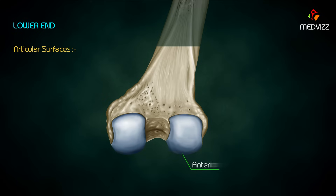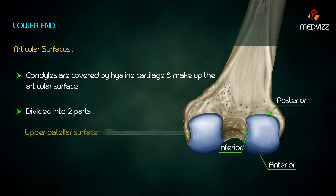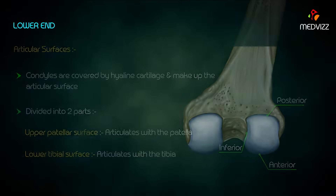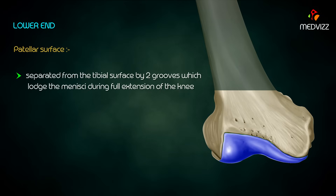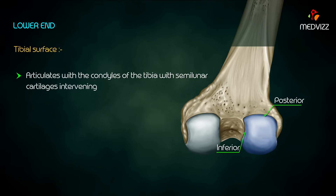The anterior, inferior, and posterior surfaces of the condyles are covered by hyaline cartilage and make up the articular surface. It is divided into two parts: the upper patellar surface articulates with the patella, and the lower tibial surface articulates with the tibia. The patellar surface extends over the anterior surfaces of both condyles, more so on the lateral side, and is separated from the tibial surface by two grooves which lodge the menisci during full extension of the knee.